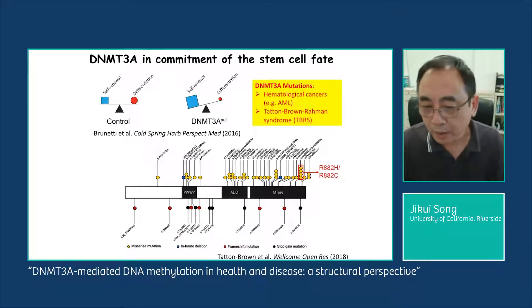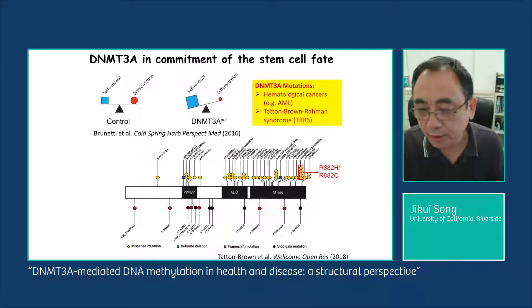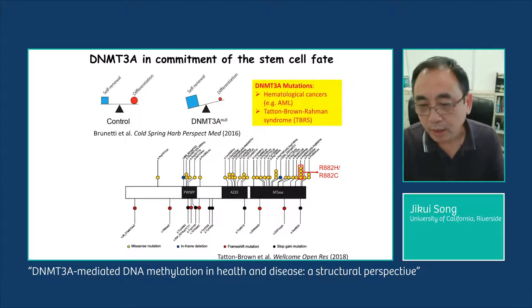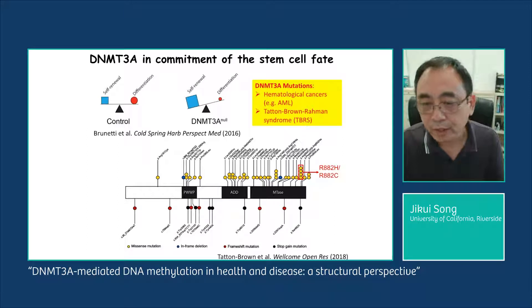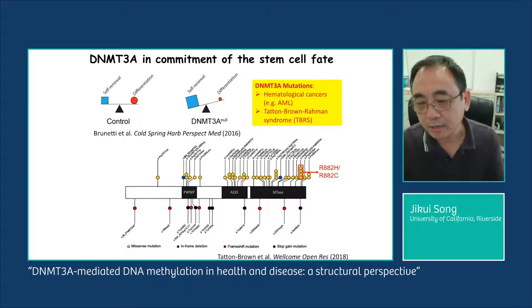I would like to point out that there is one such mutation, the Arginine 882 mutation, which is one of the hotspot mutations in AML as well as TBRS.